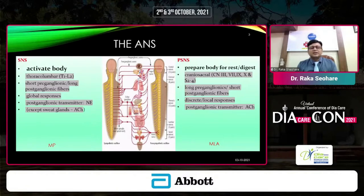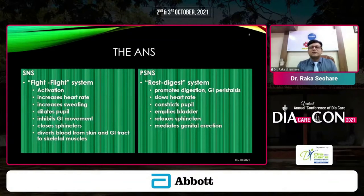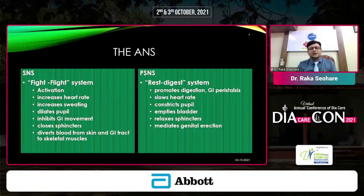The sympathetic system's main transmitter is norepinephrine. The parasympathetic nervous system has a craniosacral ganglion with long pre-ganglionic and short post-ganglionic fibres, very close to the organ, and its post-ganglionic transmitter is mostly acetylcholine — that's why the vagus nerve is associated with it. The sympathetic nervous system is the fight-or-flight system: it increases heart rate, increases sweating, dilates pupils, inhibits GI movement, closes sphincters, mediates ejaculation, and diverts blood from skin and GI tract.